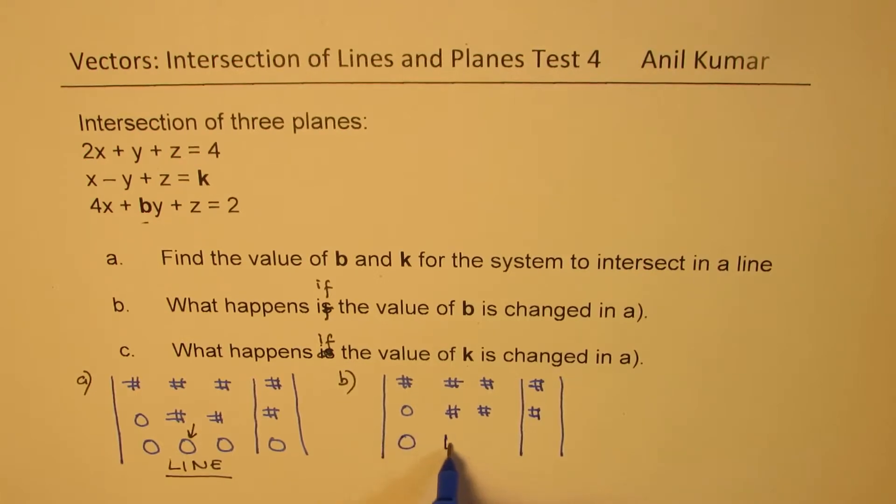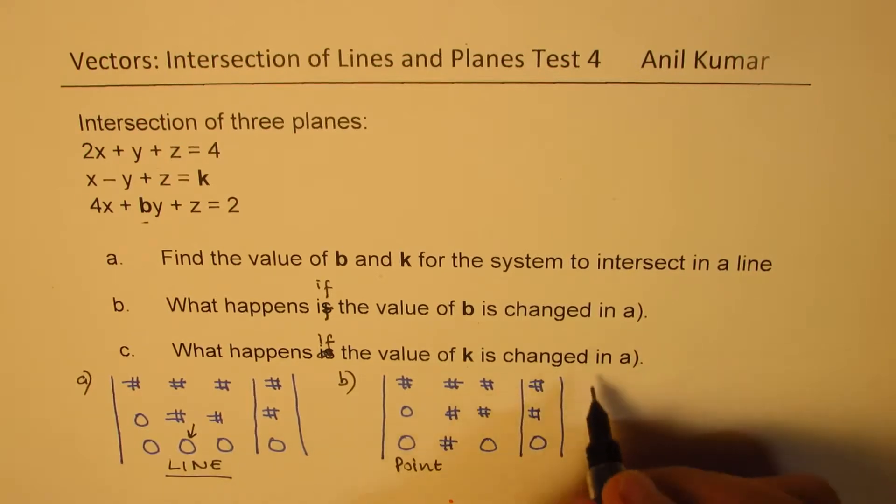So we have 0 something here, 0 equals to 0. Now definitely we have in this particular case one solution. So we have a point as our solution. So that is part b.